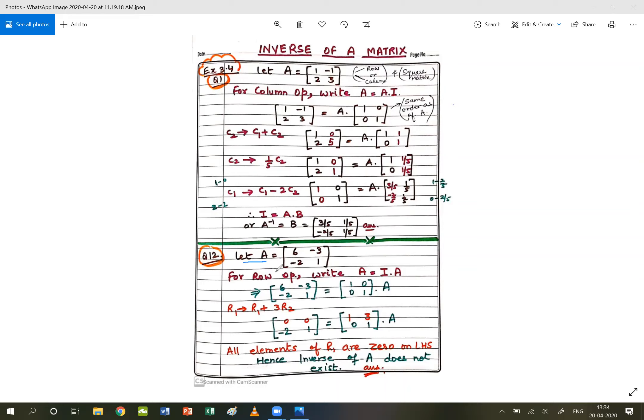So, row operations will be the first one. We will write A is equal to I times A. In column operation we have written A is equal to A into I. This order you have to keep in mind.